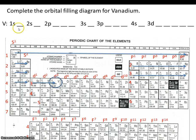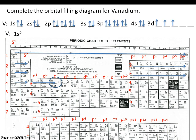Now, the electron configuration, like I mentioned, is the same information, just represented in a condensed fashion. So let's go ahead and fill in all the arrows that represent the electrons. You can see in energy level 1 there are two electrons. So we write 1s2 — this tells us the energy level, this tells us the sublevel, and this tells us how many electrons there are.